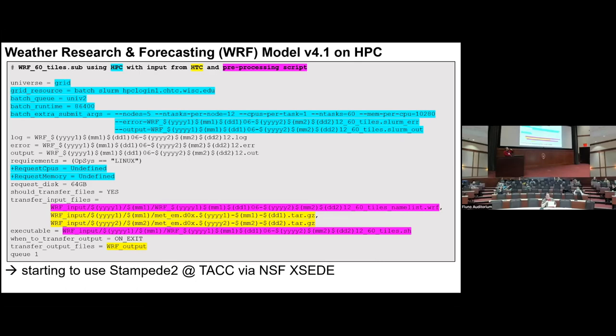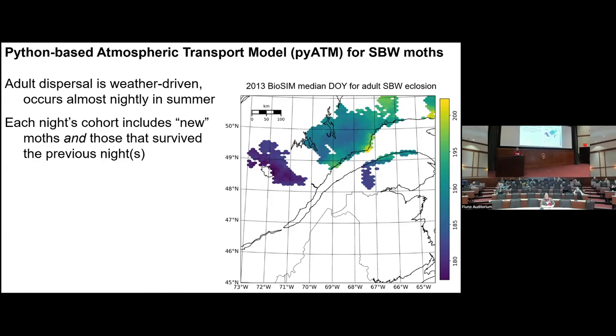Now that I have an allocation on Stampede2, which has a two-factor authentication requirement to submit jobs, we're going to start transforming this script for external submissions from there. The actual nightly moth dispersal runs use a whole bunch of different dataset inputs.